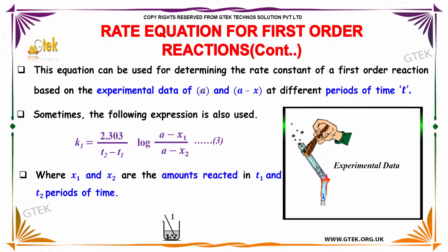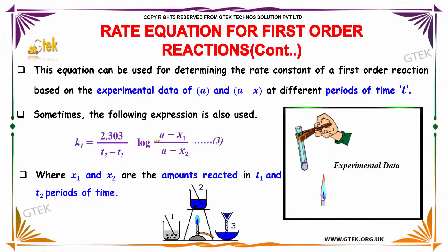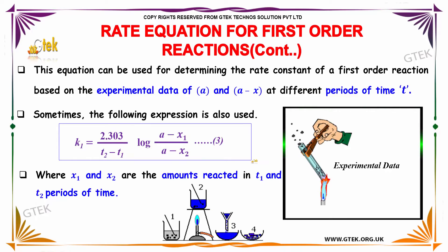This equation can be used to calculate the rate constant of a first-order reaction based on experimental data of a and (a-x) at different periods of time t. Where x1 and x2 are the amounts that are reacted in t1 and t2 periods of time.